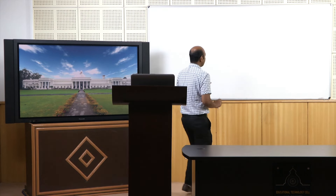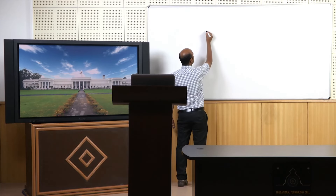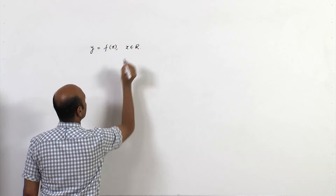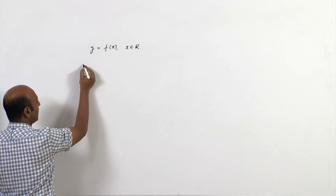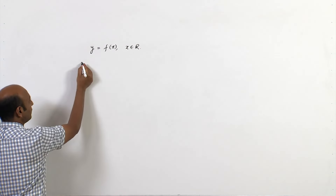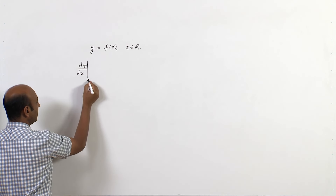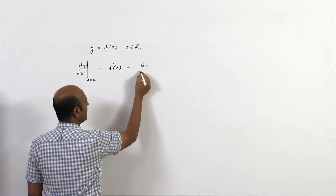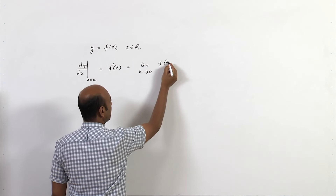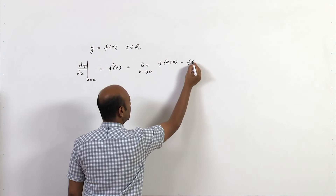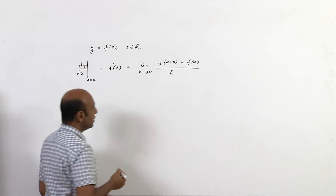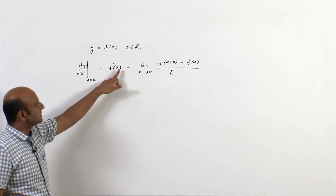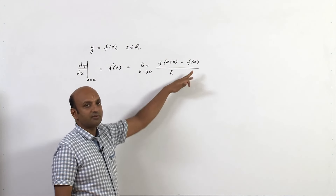We start with functions of one variable. If we have a function of one variable y = f(x), where x belongs to ℝ, and the function is differentiable at a point x = a, then dy/dx at x = a, or f'(a), is defined as the limit as h tends to 0 of [f(a+h) - f(a)] / h.